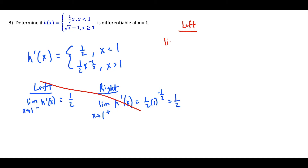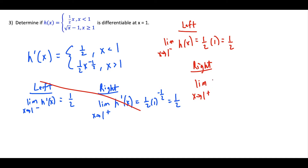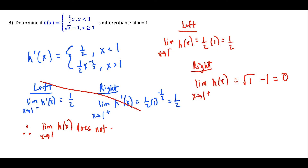Checking the left-side limit: the limit as x approaches one from the left of h(x) equals one half times one, which equals one half. For the right-side limit, the limit as x approaches one from the right of h(x) equals the square root of one minus one, which equals zero. Alarm bells should be going off — the left and right limits are not equal. Therefore the limit as x approaches one of h(x) does not exist.